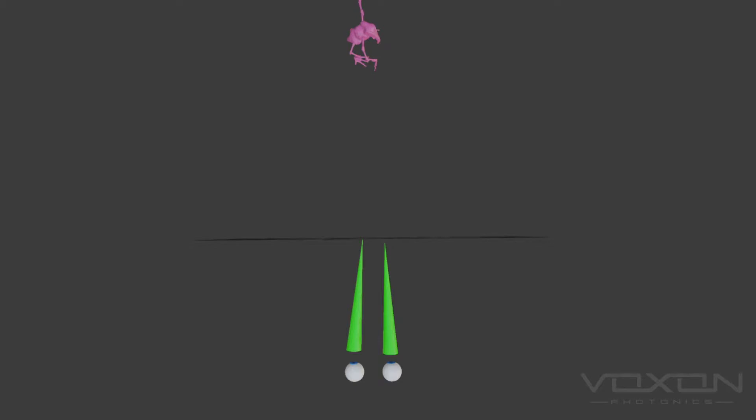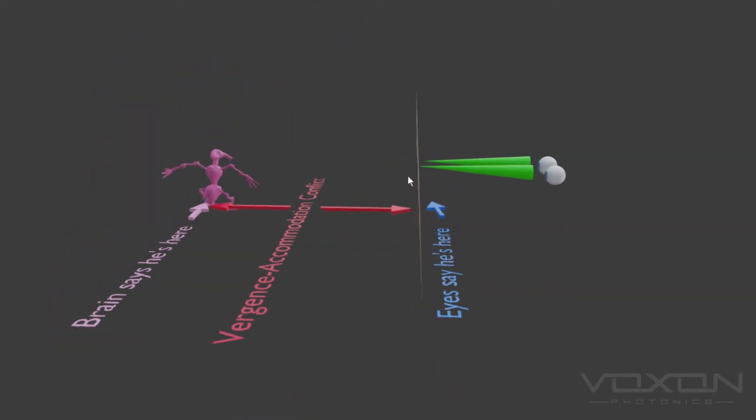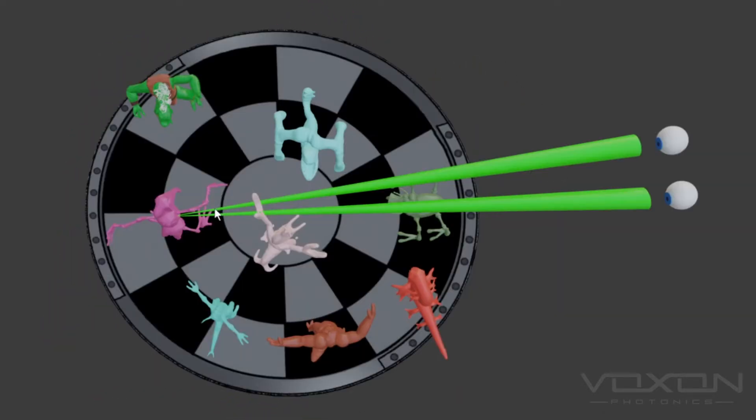However, while your brain may see an object behind the screen, your eyes are focused on the screen itself. The mismatch between where you see the object and where you focus is called the vergence-accommodation conflict, and it can cause fatigue and discomfort. In a volumetric display,